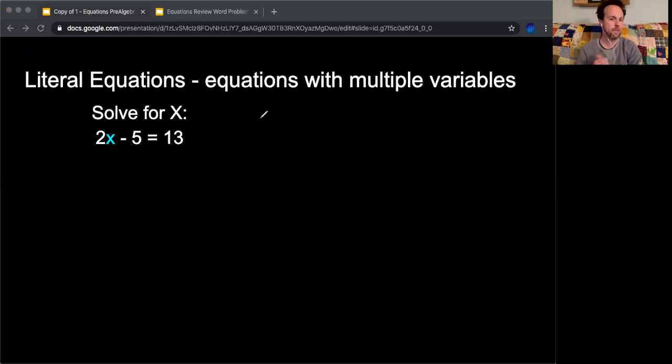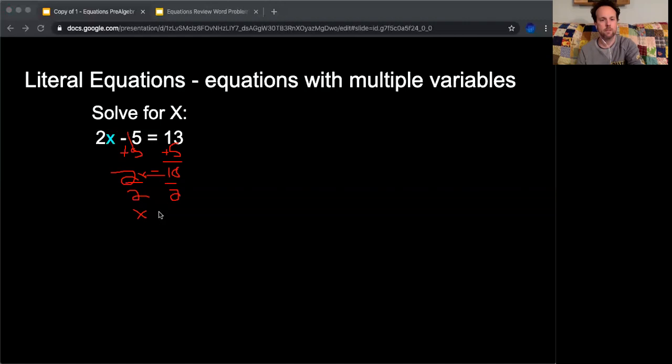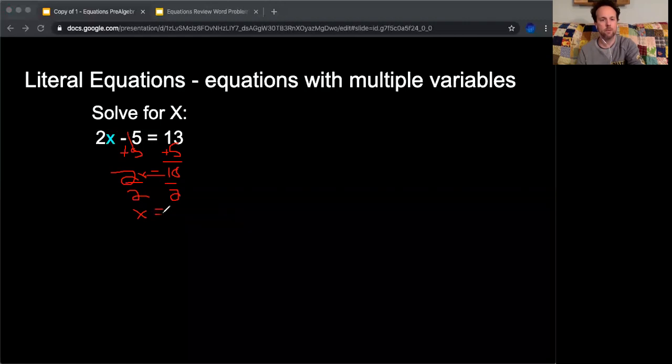The first thing that we would do is I would add 5 to both sides, plus 13 plus 5, which gives me 18. And then I bring down my 2x, because those cancel out, 2x equals 18. And then I divide both sides by 2, and I get a nice answer of x equals 9.